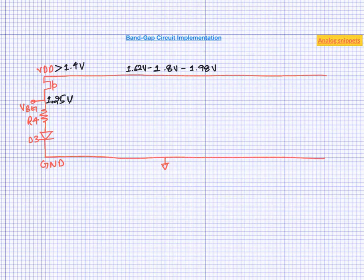Now let's insert the core of the bandgap. We have two branches here: one containing only diode and other containing a larger diode and a resistor. We know if we make Vn and Vp equal, then current flowing in these two branches will be PTAT. In order to make these two voltages equal, we need to now insert an amplifier.